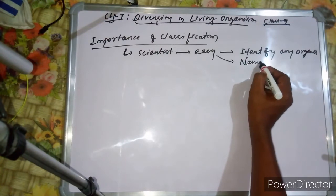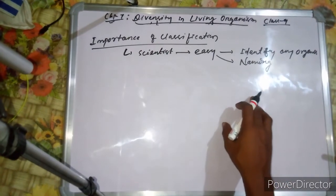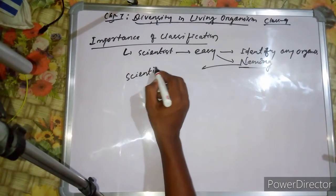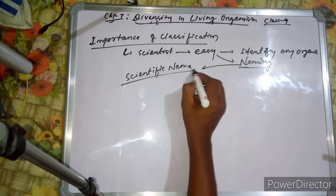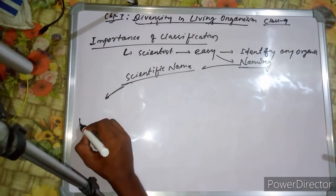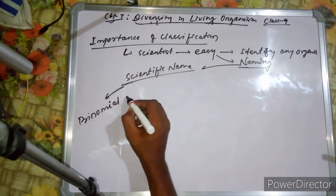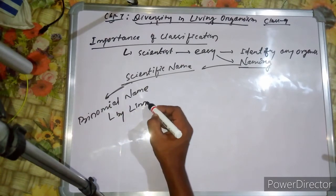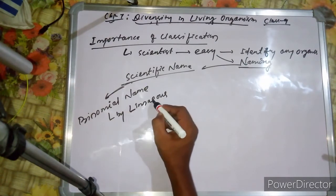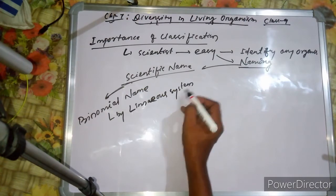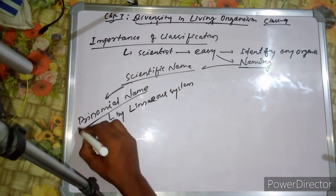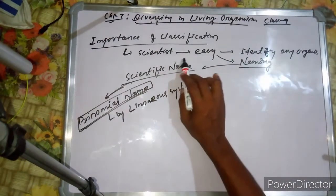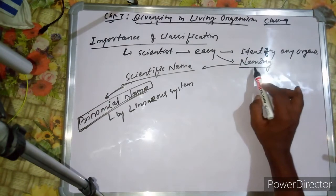It is also easy to name any organism. Naming is done on a scientific basis — we call it the scientific name. Scientific names are based on the system by Carolus Linnaeus — the Binomial Naming system. We will study binomial naming in the next lecture.